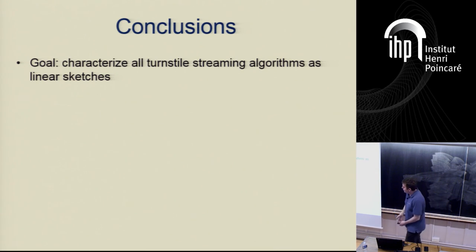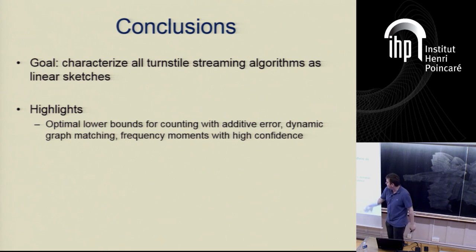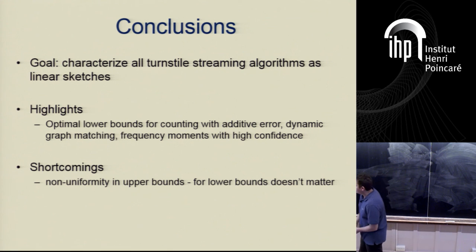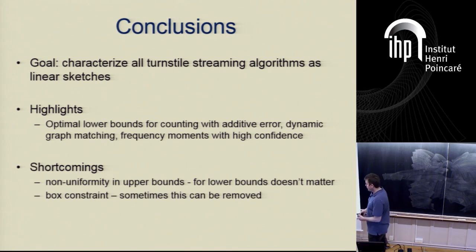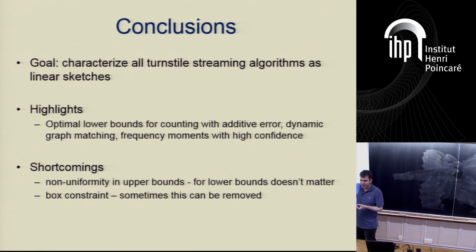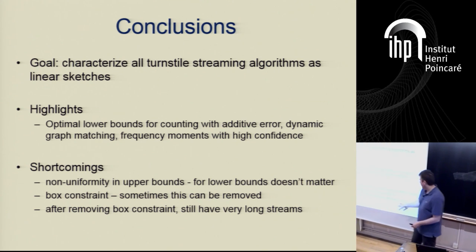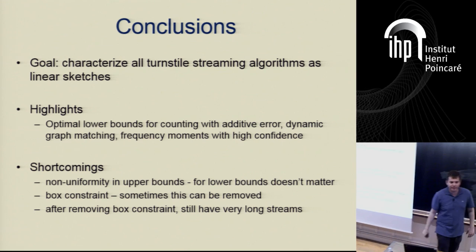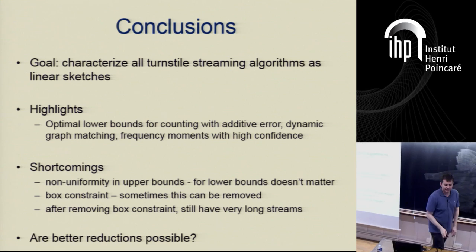To conclude, the goal of this line of work is to characterize all turnstile streaming algorithms as linear sketches. Highlights include optimal lower bounds for counting with additive error, dynamic graph matching, and frequency moments with low error probability. Shortcomings include huge non-uniformity in upper bounds (though it doesn't matter for lower bounds), the box constraint on intermediate stream coordinates, and long streams from zero-frequency random walks. A natural open question is whether better reductions can remove these shortcomings.